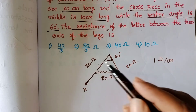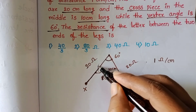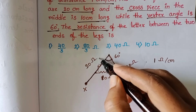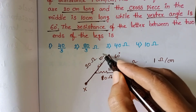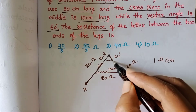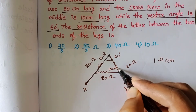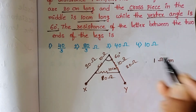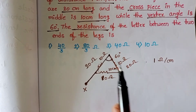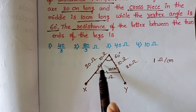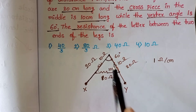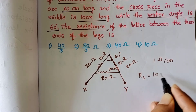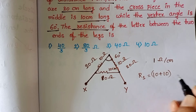The two upper resistors — each 10 ohm — are connected in series, so their equivalent resistance becomes 20 ohm.